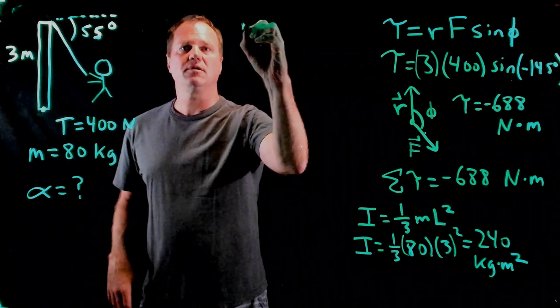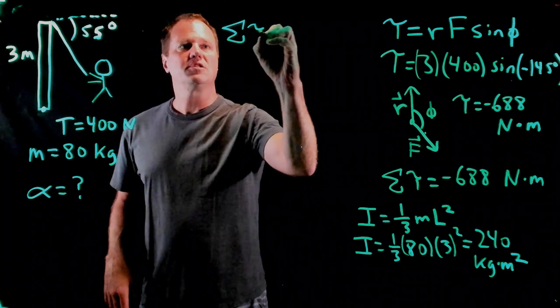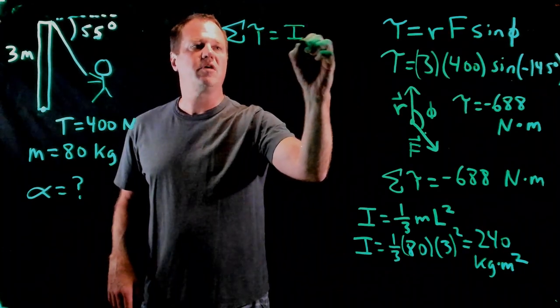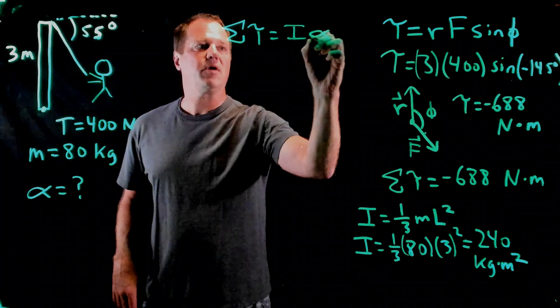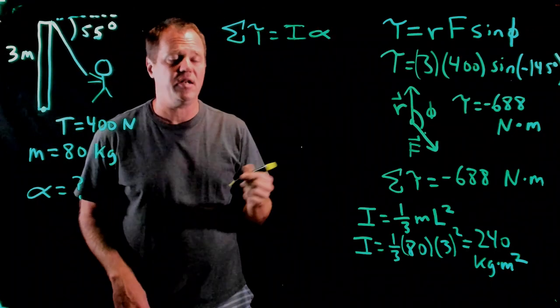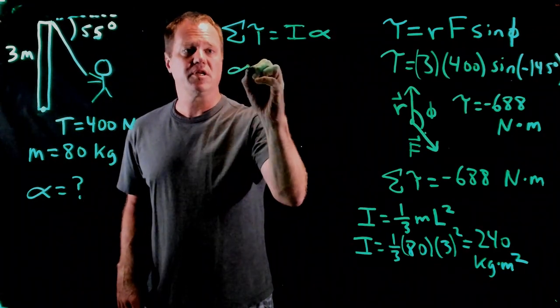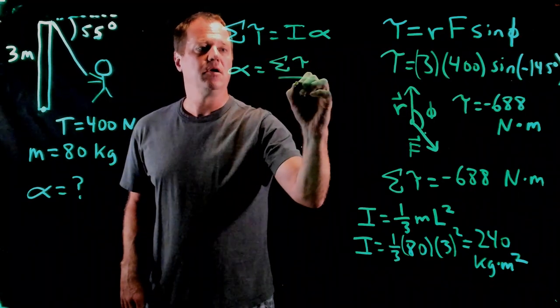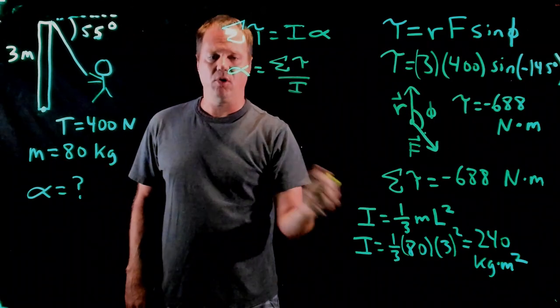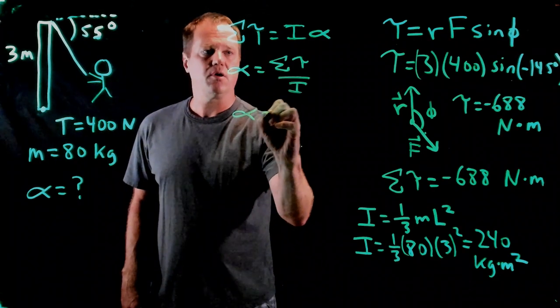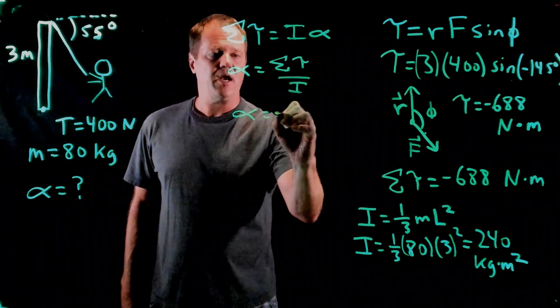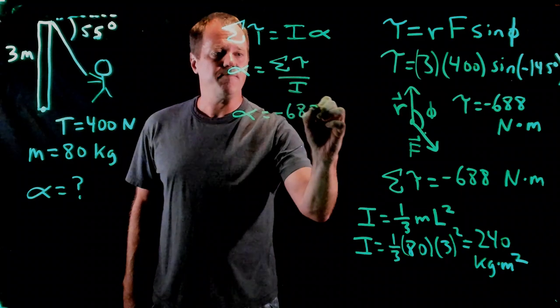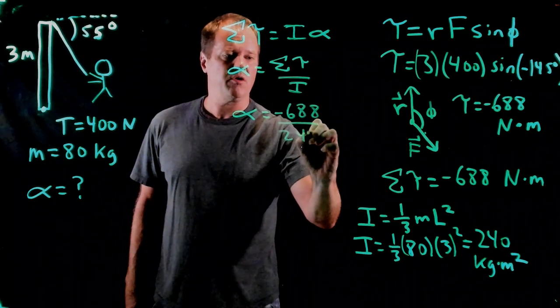So the rotational analog to Newton's second law looks like this. Summation of the torques equals the moment of inertia times the angular acceleration. And then I can solve for angular acceleration. Total torque divided by moment of inertia. I've got both of those numbers.